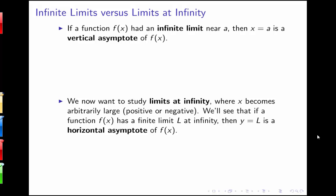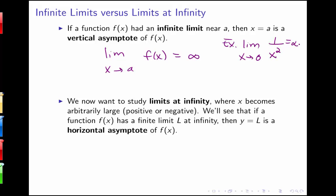We've talked about infinite limits before, though we may not have used that term. We discussed situations like the limit as x approaches a of f(x) being equal to infinity — for example, the limit as x goes to 0 of 1 over x squared equals infinity. This is an infinite limit: as x approaches some number a, the function gets larger and larger. If we have one of these infinite-type limits, we get a vertical asymptote.